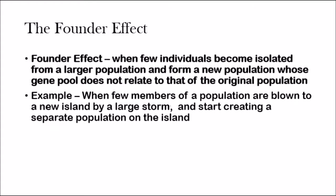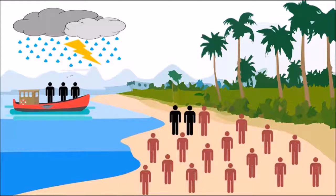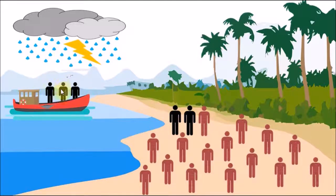The founder effect is when a few individuals become isolated from the larger population and form a new population whose gene pool does not relate to that of the original population. For example, when a few members of a population are blown to a new island by a large storm and they start creating a separate population on the island. Because you only have a few organisms — a small population — the population they form on their separate island is going to have different allele frequencies than the original population. That's an example of microevolution.